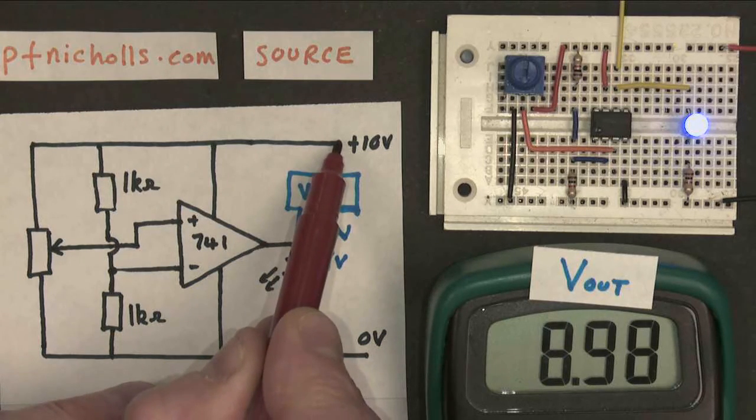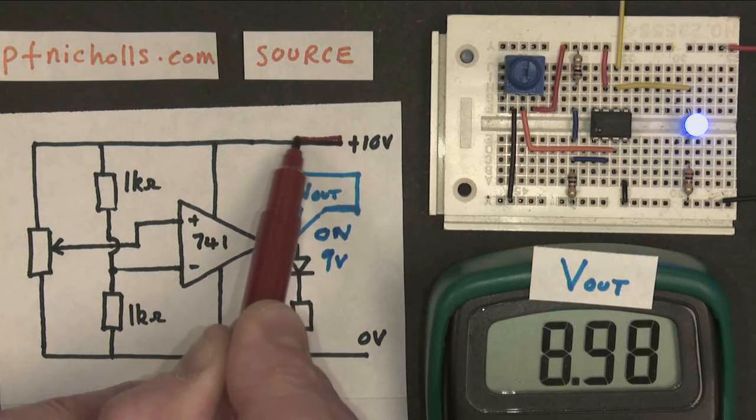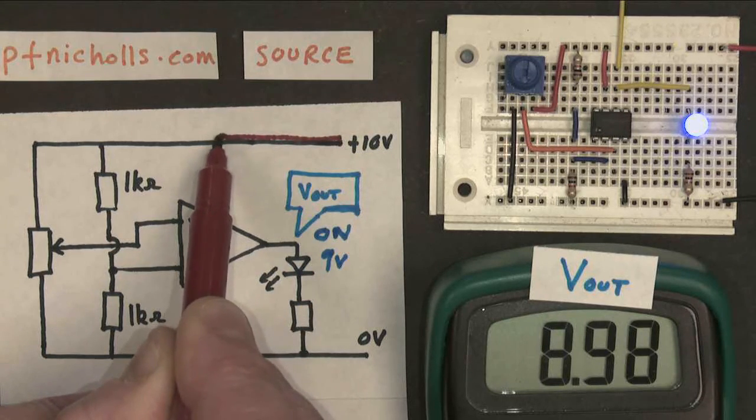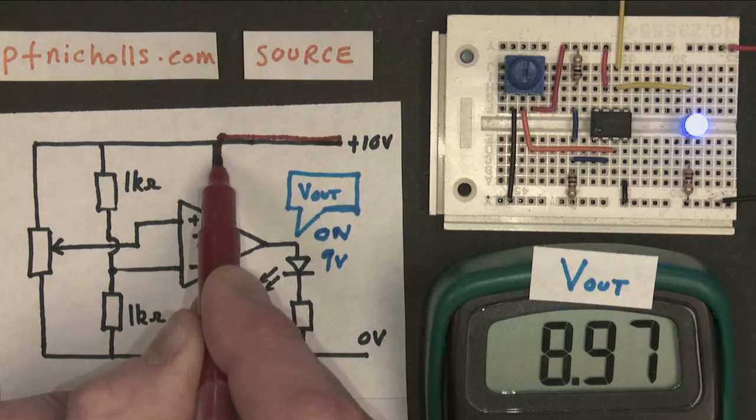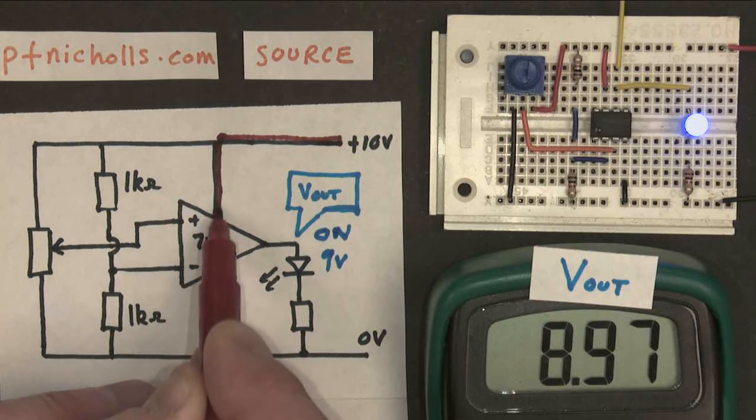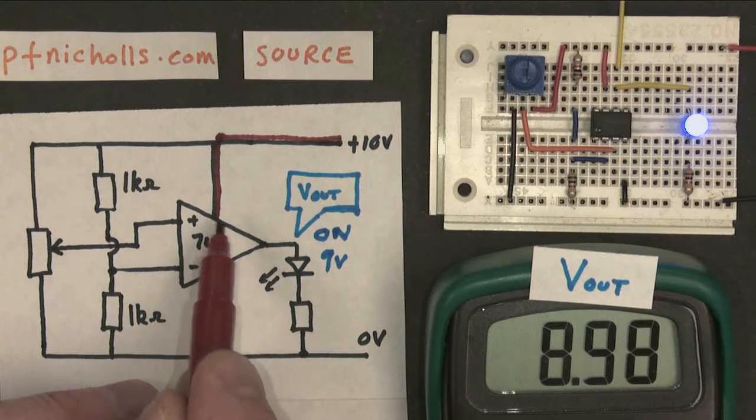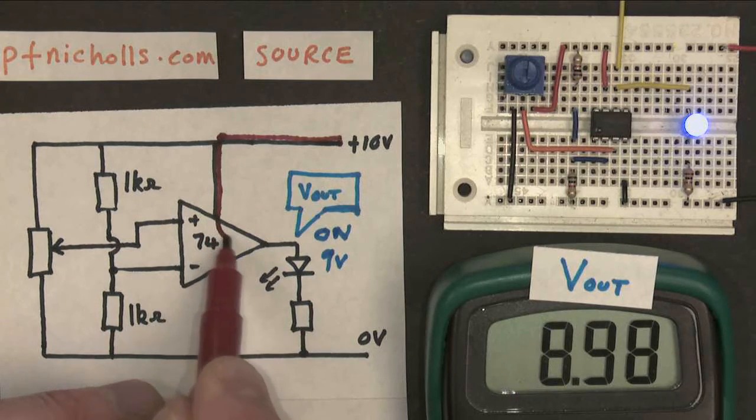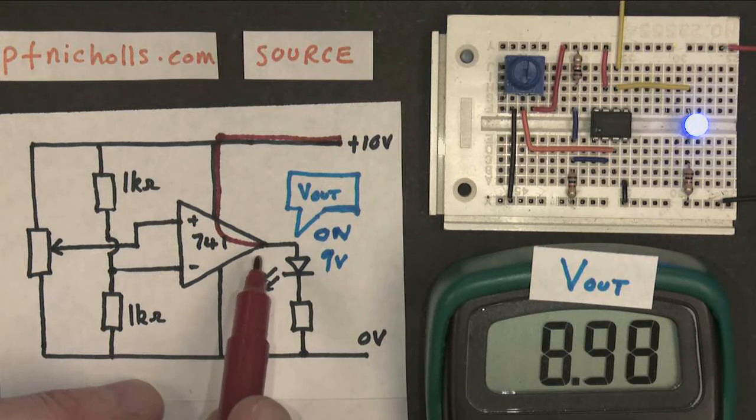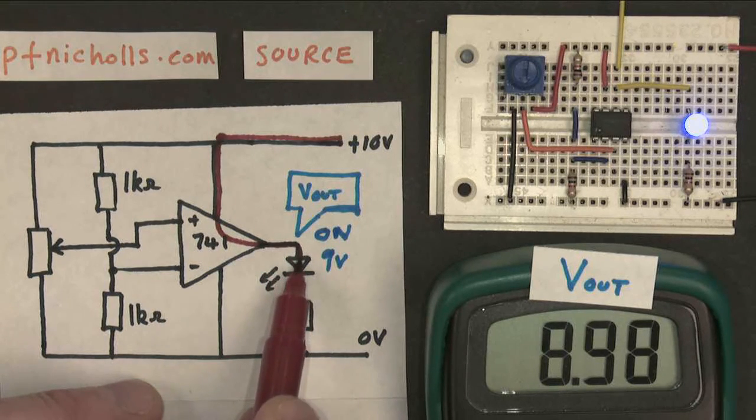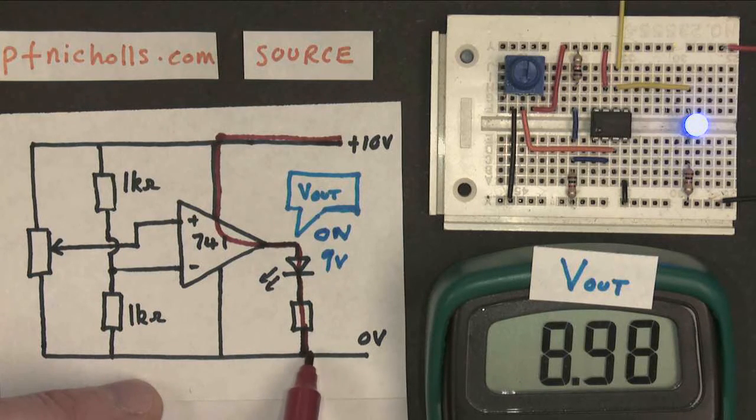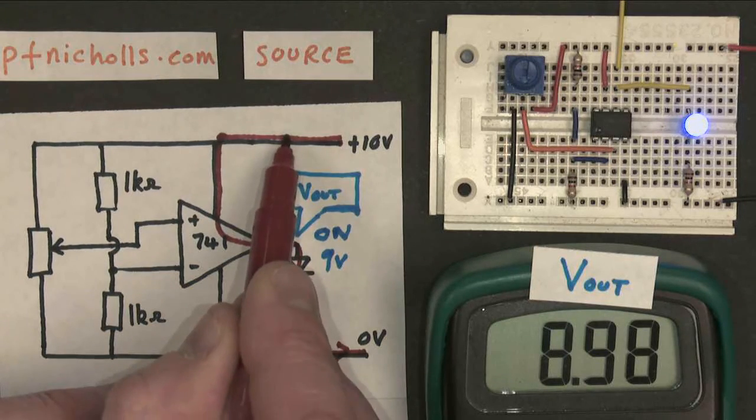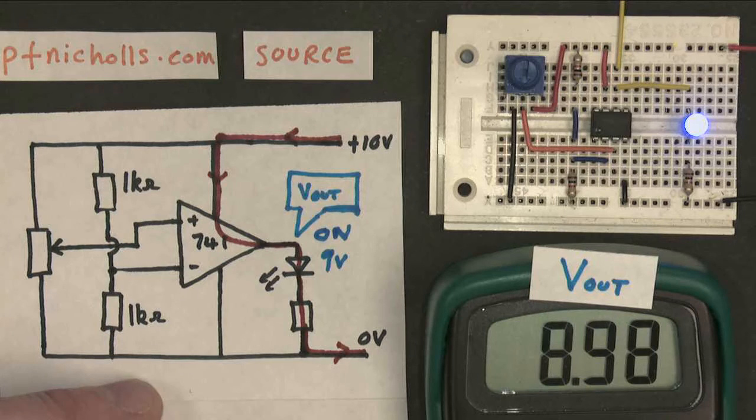So the current starts from the power supply. The power supply sources current in the same way that a river source provides, you know, is where the water comes from. So the power supply sources current, current flows into the op amp through the power supply, it flows through the internal workings of the op amp or whatever chip I'm using, through the LED which makes it light up, through the current limiting resistor which stops it catching fire or something, and then goes back down to 0 volts back to the power supply. So this is the route that the current takes.